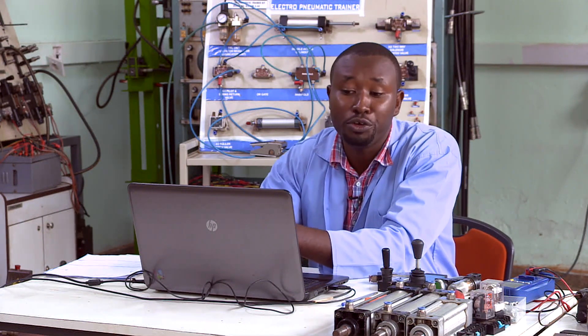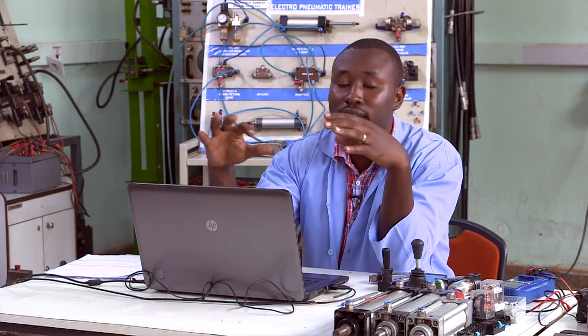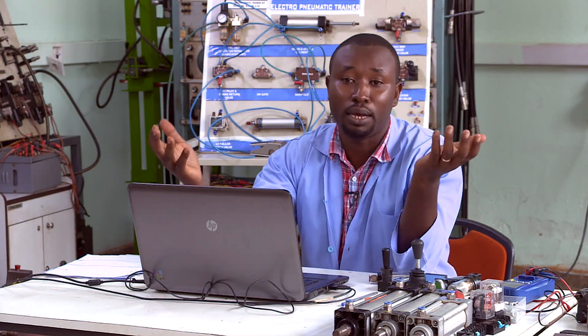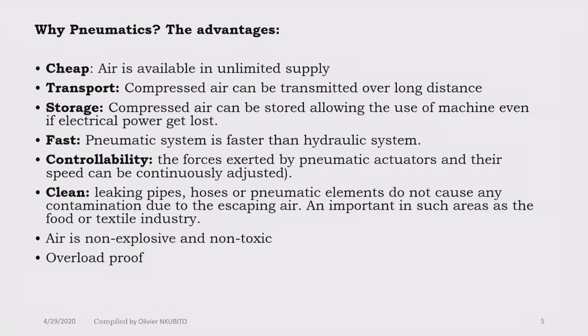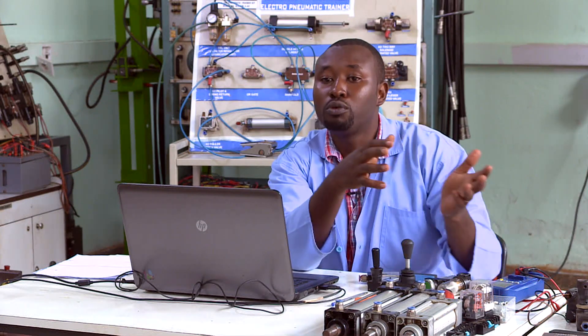Why do we prefer pneumatics? The advantages are: first, air is available and in unlimited supply. Second, air can be transported over long distances. Third, we can store air so we can keep working even if electrical power is lost. Pneumatics also works faster than hydraulics. Pneumatics is clean — unlike hydraulic oil — which means we can use it in textile or food industries. Pneumatics is also non-explosive, non-toxic, and has overload protection.